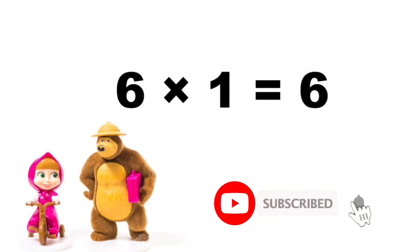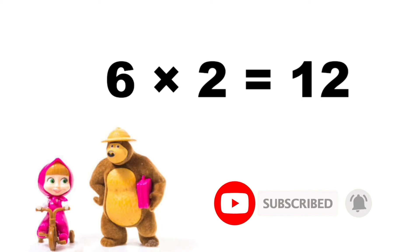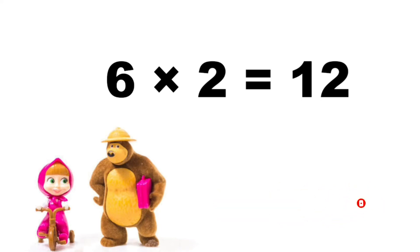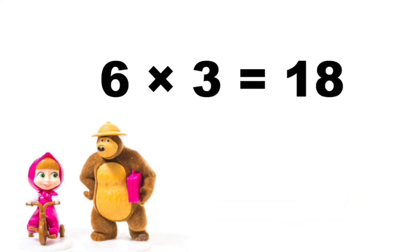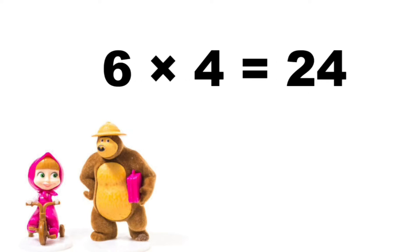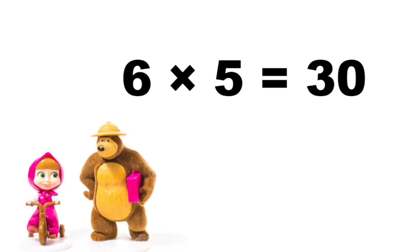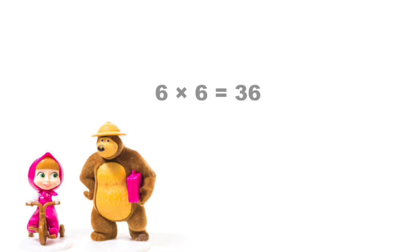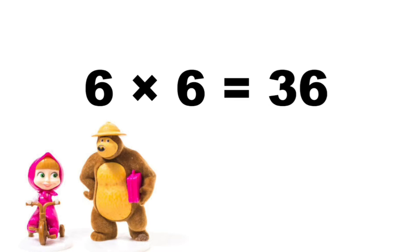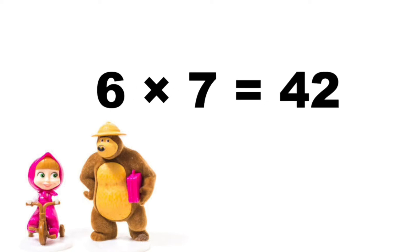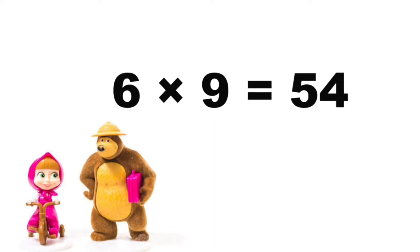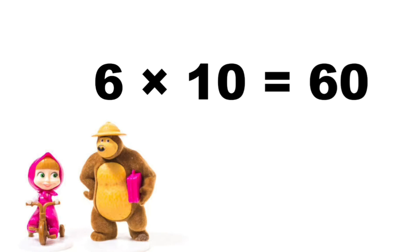Six ones are six, six twos are twelve, six threes are eighteen, six fours are twenty-four, six fives are thirty, six sixes are thirty-six, six sevens are forty-two, six eights are forty-eight, six nines are fifty-four, six tens are sixty.